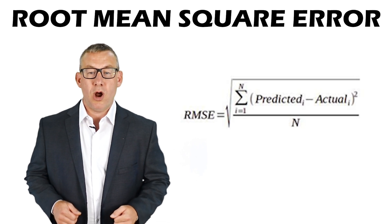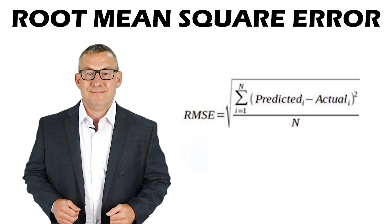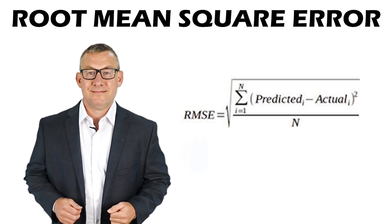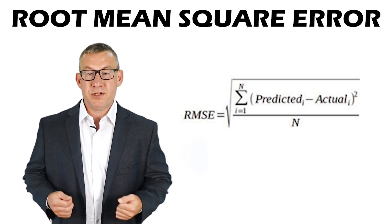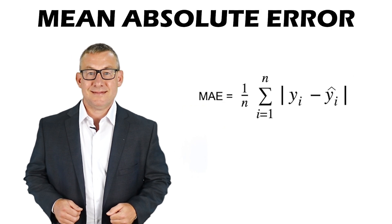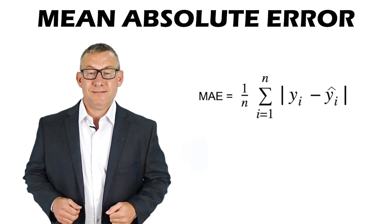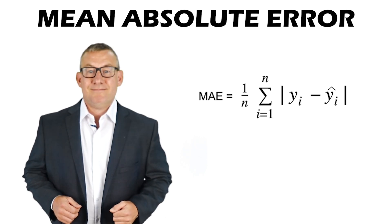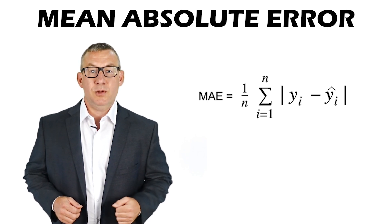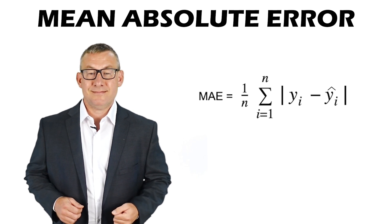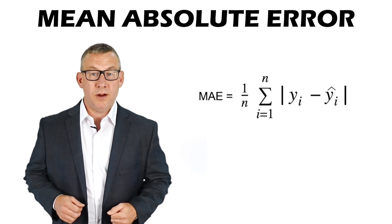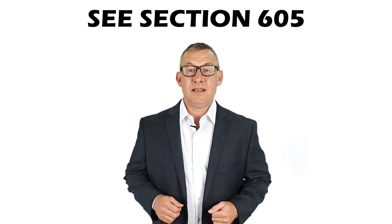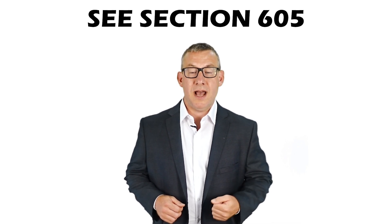The root mean square error, or RMSE, is the square root of the average of squared errors. The RMSE indicates the distribution of errors from the mean. The mean absolute error is the average error. The mean absolute error is less sensitive to outliers than the RMSE and doesn't square the distances from the mean. See Section 605, Knowledge of Descriptive and Spatial Statistics, for more about data error statistics.